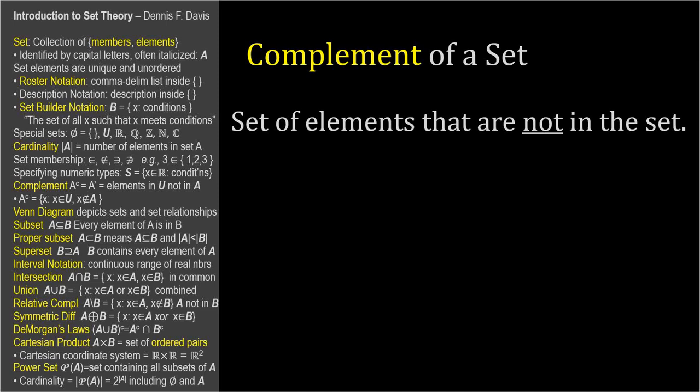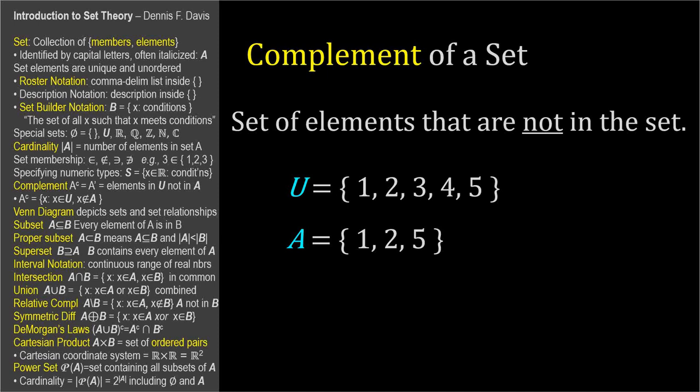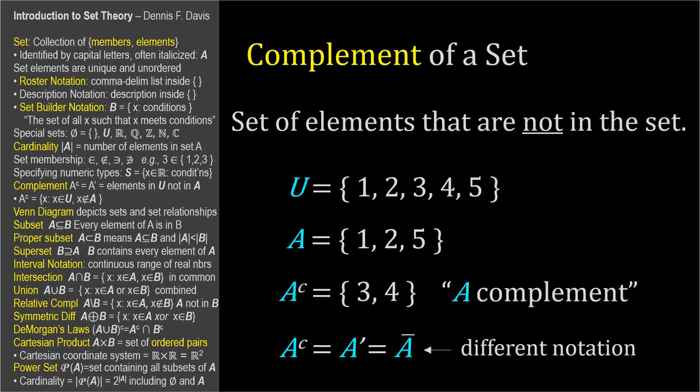The complement of a set is the set of all elements in the universal set that are not in the set. For example, if the universal set is the set of 1, 2, 3, 4, and 5, and set A is the set of 1, 2, and 5, then the complement of A would be the set of 3 and 4. The symbol for complement is the set label with a superscripted C — it's read as 'A complement.' It can also be written with a prime character, or with a bar over the set's label. Set theory often has more than one way to represent certain concepts.